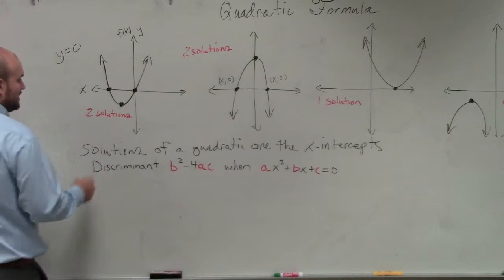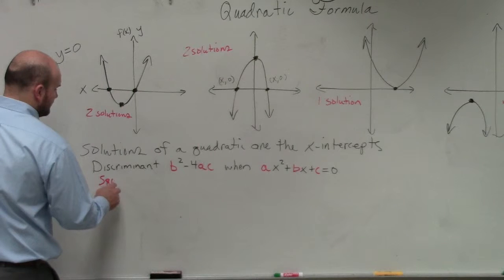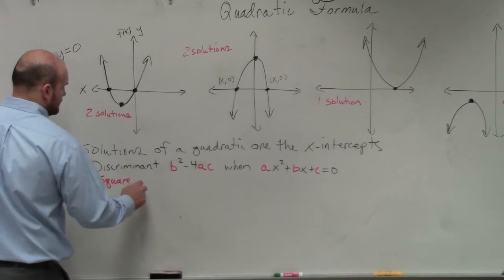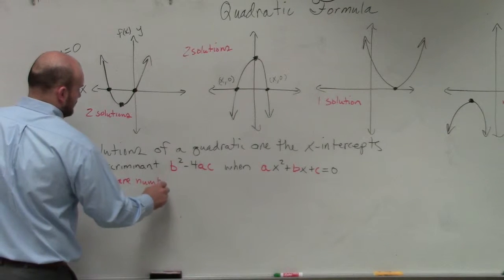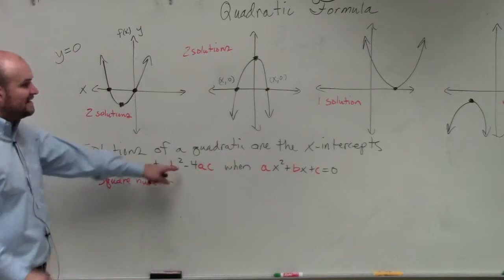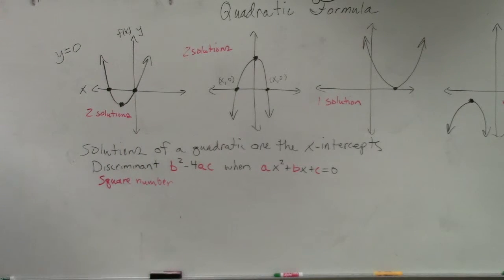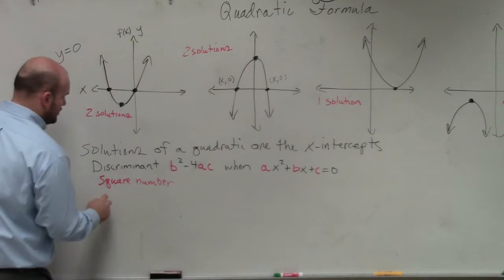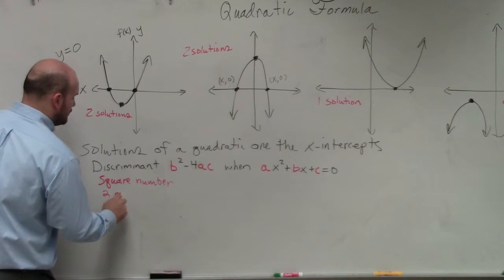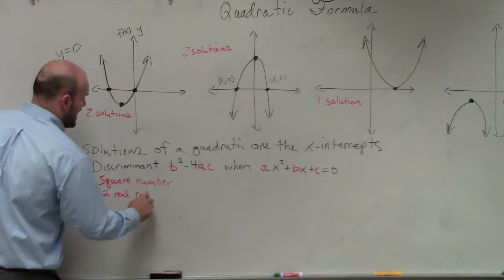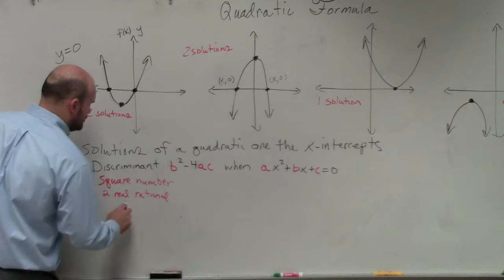So in this example, if you have a square number for your discriminant, if you find out you have a square number, if you guys don't remember square numbers, I listed out square numbers from my pre-calc class all the way over here. Square number, you are going to have two real rational solutions.